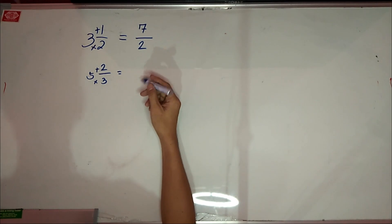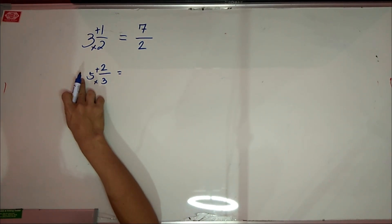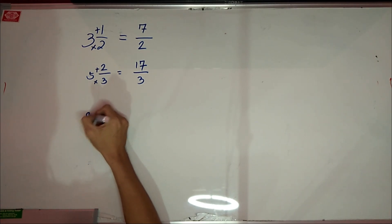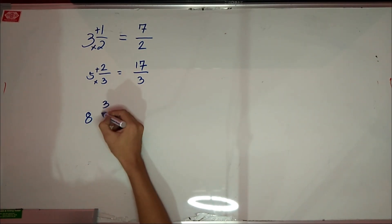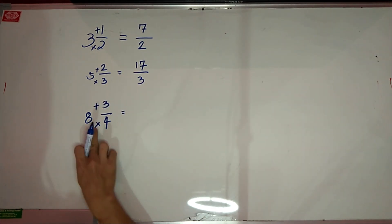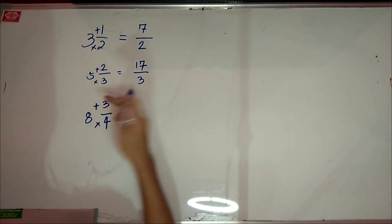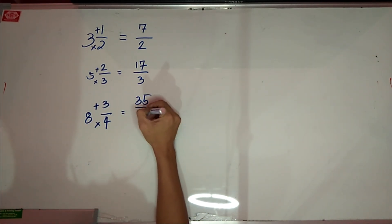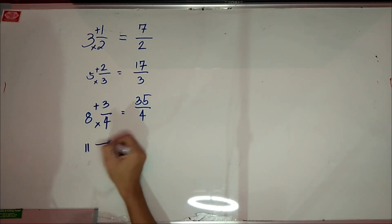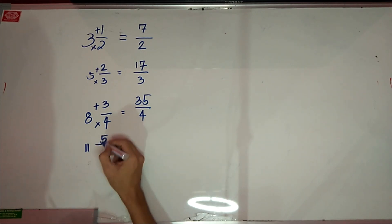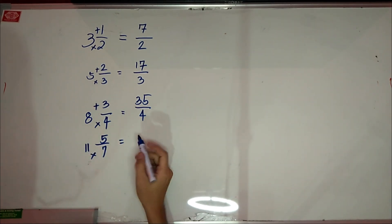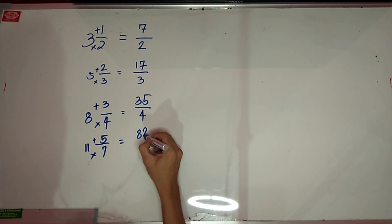Another example: five and two over three. Denominator times whole number, then add to your numerator. Three times five is fifteen, plus two is seventeen, over three. Another example: eight and three fourths. Multiply then add: four times eight is thirty-two, plus three is thirty-five, over four. Another example: eleven and five over seven. Seven times eleven is seventy-seven, plus five is eighty-two over seven.